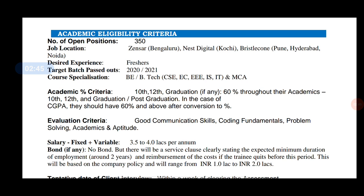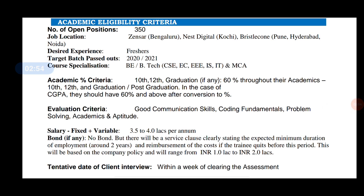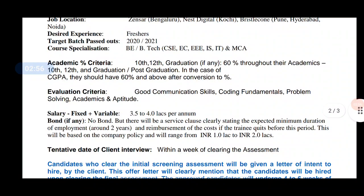If you get the academic mark, you get 60% of the mark. If you have 60% of the gradation, you get 60%. If you have 60% CGPA, you also get 60% of the percentage. You can also help your skills — coding and aptitude test.